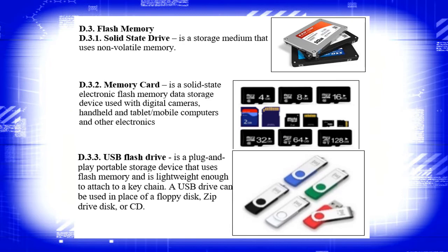For flash memory, the solid state drive is a storage medium that uses non-volatile memory. A memory card is a solid-state electronic flash memory data storage device used with digital cameras, handheld and tablet computers, and other electronics — we also have these in our cell phones. The USB flash drive is a plug-and-play portable storage device that uses flash memory and is lightweight enough to attach to a keychain. A USB drive can be used in place of a floppy disk, zip drive, or CD.